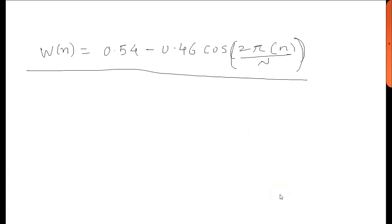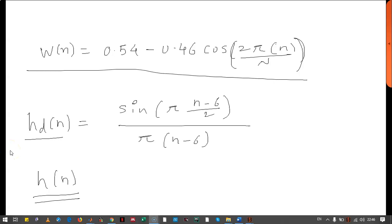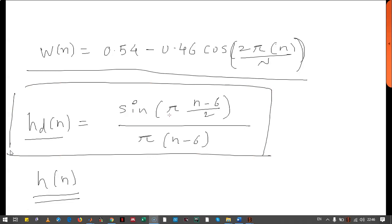The Hamming window function is given like this. We multiply our desired filter response by the windowing function and we get h(n), and this is the design of a filter. We solve a problem in the class where the desired frequency response comes out to be sin(π(n−6)/2) divided by π(n−6). Designing the filter — that means calculating h(n) — is nothing but multiplication of respective samples of the windowing function and the desired filter response.